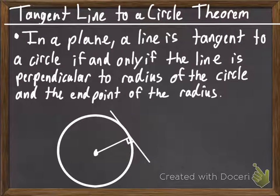Alright, our first theorem. Tangent line to a circle theorem. In a plane, so on our coordinate grid in space where we exist. In a plane, a line is tangent to a circle if and only if,